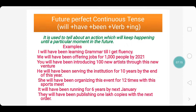That means she has already organized it 11 times and with this meet it is the 12th time. It will have been running for 6 years by next January — it may be a machine, a vehicle, or whatever. They will have been publishing 1,000,000 copies with the next order.